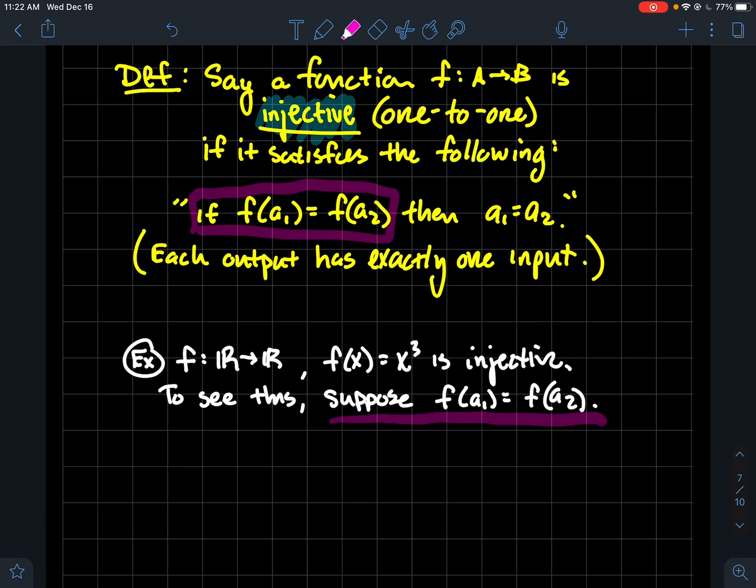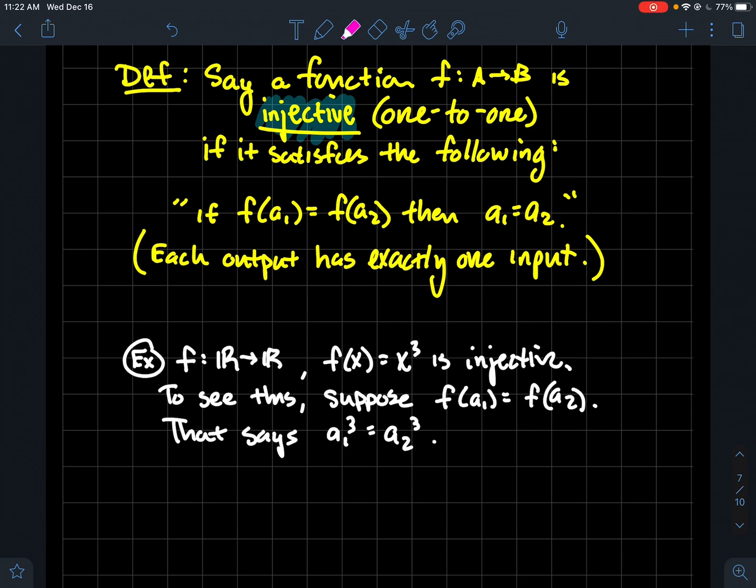So to see this, we're going to suppose f of a1 equals f of a2. So again, as far as from this definition up here, that's your foothold. That's where you start from. So suppose that happens. So if that, what do we want to do? Well, I want to be able to get to a1 equals a2. And so in my problem down here, I know what f does to a1 and a2. It cubes it. So this equation that I've written right here is the same thing as saying a1 cubed equals a2 cubed.